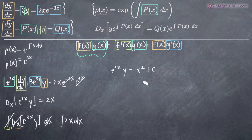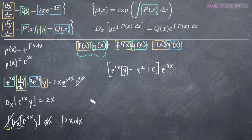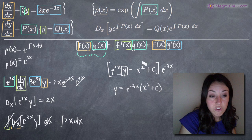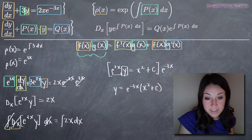The last thing we have to do is solve for y. We multiply both sides by e to the negative 3x. Since e to the 3x times e to the negative 3x gives e to the 0, which equals 1, that term cancels and we get y on its own. So our final answer is y equals e to the negative 3x times (x squared plus C). This is the general solution to our linear differential equation.